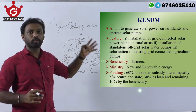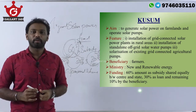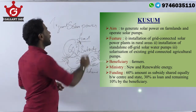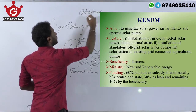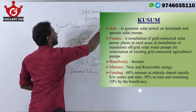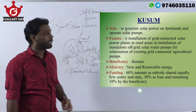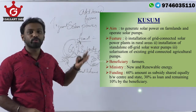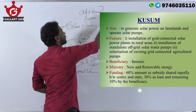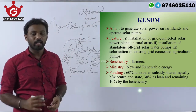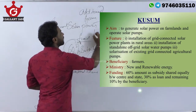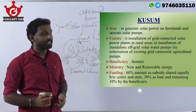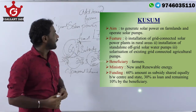The core objective of the Kusum scheme is to generate solar power on farmlands and to operate solar pumps. Additionally, the surplus solar energy can be sold, and thereby farmers can get additional income from their agricultural field by selling the surplus energy. Apart from that, it also helps to achieve our national target of 175 gigawatts of renewable energy. So because of this scheme, there are many benefits to our country.